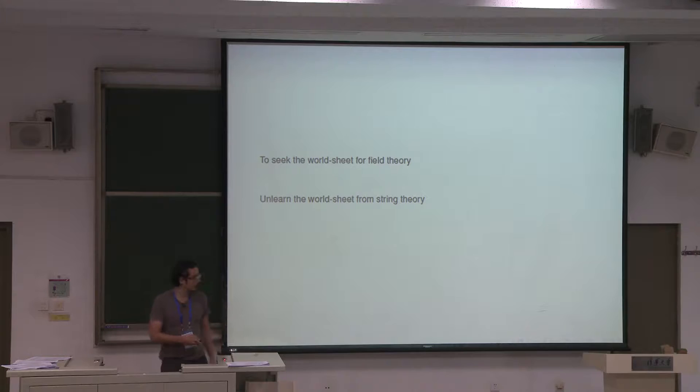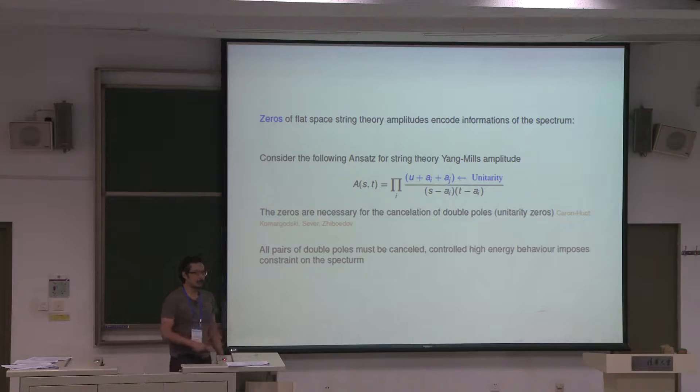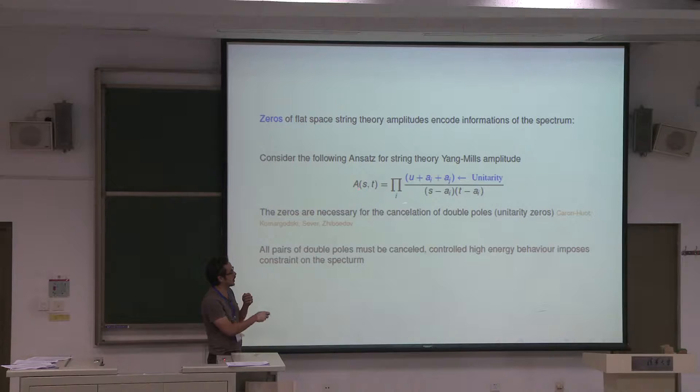If I were to say what is string theory from a scattering point of view, I would say string theory is a particular solution to this problem: consider a scattering amplitude of Yang-Mills that is ultraviolet completed, meaning you have an infinite number of massive states. String theory is characterized by writing your amplitude with all the propagators in the denominator. Unitarity then gives a constraint — you cannot have simultaneous singularities in two channels, because that would mean your theory is non-local.